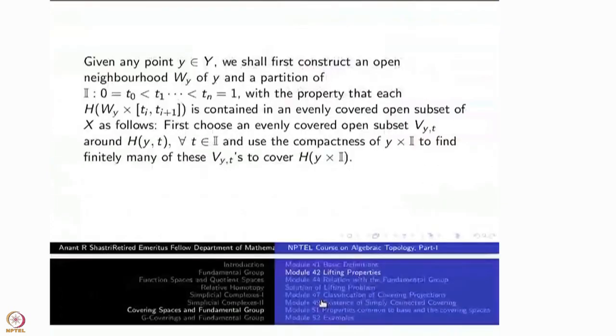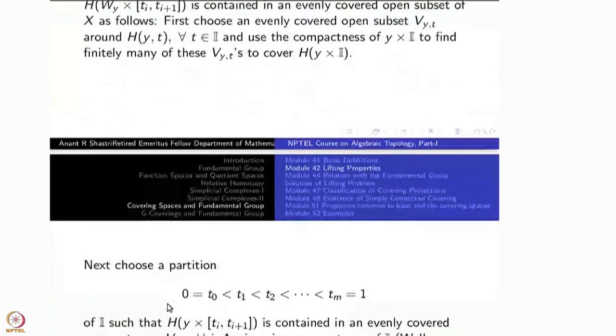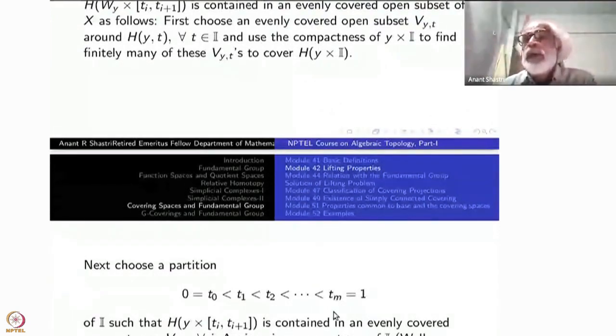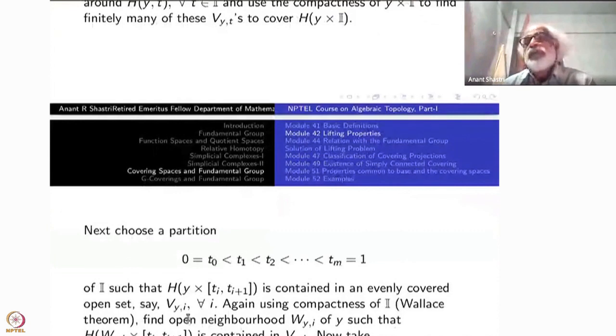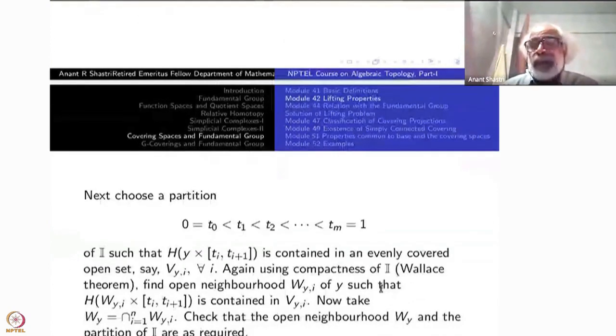Y cross I is compact, H of Y cross I is compact. Choose evenly covered neighborhoods around these points inside X just that finitely many of them cover the entire path H of Y cross I. Everything is inside X now. Once you have done that, choose a partition. There are only finitely many open subsets. So this is the standard argument with Lebesgue number for the interval. So the interval can be divided into finitely many subintervals such that consecutive intervals Y cross [t_i, t_{i+1}], H of that will go into one of the open sets.